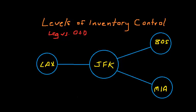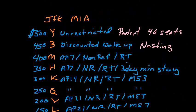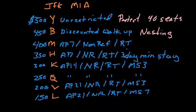In the last video, we used this example of JFK to Miami to create some fare products. So we had these different fares, and we said that the airline determines how many seats to sell at each fare in order to maximize revenue.